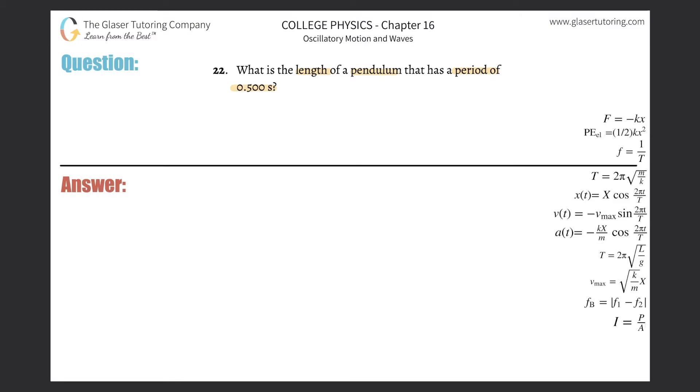This formula here, T equals 2π times the square root of L over g, this is for pendulums. Notice how the period of a pendulum is independent of mass. There is no mass in that formula. Notice how the period of simple harmonic motion here is dependent on the mass.